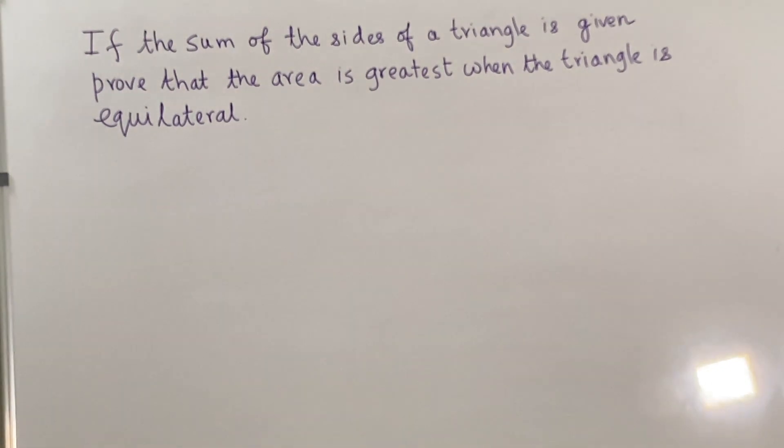Welcome to another edition of Math for No Reason. In this edition we are going to prove this well-known result which states that if the sum of the sides of a triangle, that is the perimeter, is given, then the area is greatest when the triangle is equilateral.